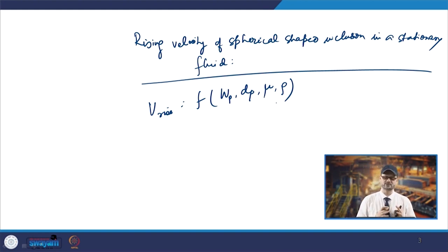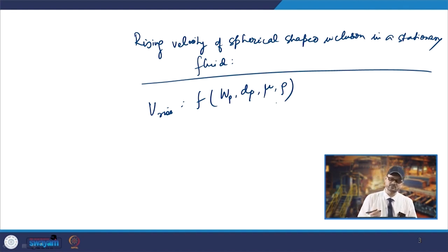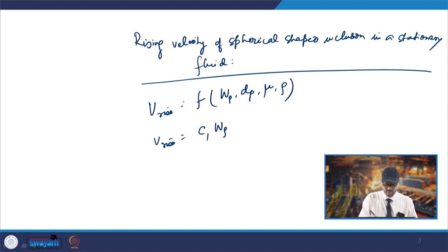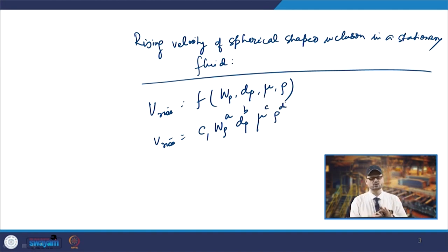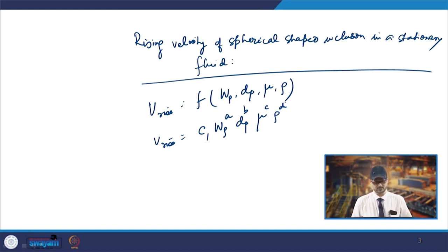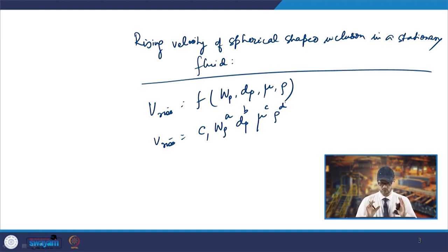Using Rayleigh's method of indices, you can write the functional relationship: v_rise = c₁ · W_p^a · d_p^b · μ^c · ρ^d. So these are the indices, and you will need to know the dimensions of each of these variables.